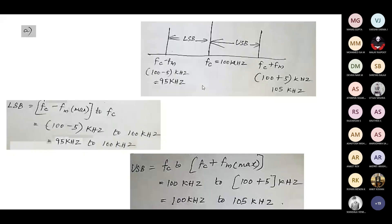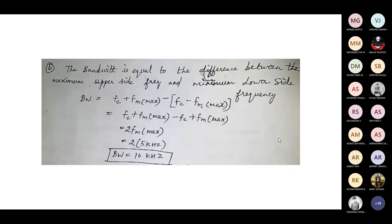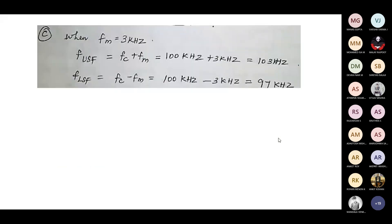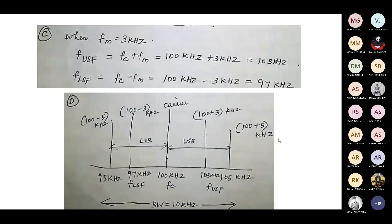The bandwidth is twice FM max, which is 10 kilohertz — you can take the difference of Fc plus FM and Fc minus FM. If there is another modulating frequency of 3 kilohertz, the upper and lower sidebands are 103 and 97 kilohertz. Mention both sets of upper and lower sidebands in the spectrum with respect to both modulating frequencies.